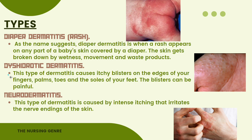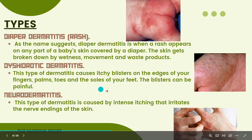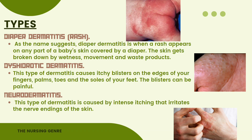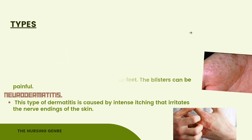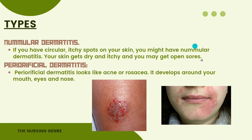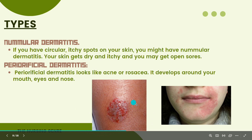Dyshidrotic dermatitis causes itchy blisters on the edges of your fingers, palms, toes, and soles of your feet. The blisters can be painful. Neurodermatitis is caused by intense itching that irritates the nerve endings of the skin. Nummular dermatitis presents as circular itchy spots on the skin; your skin gets dry and itchy and you may get open sores.